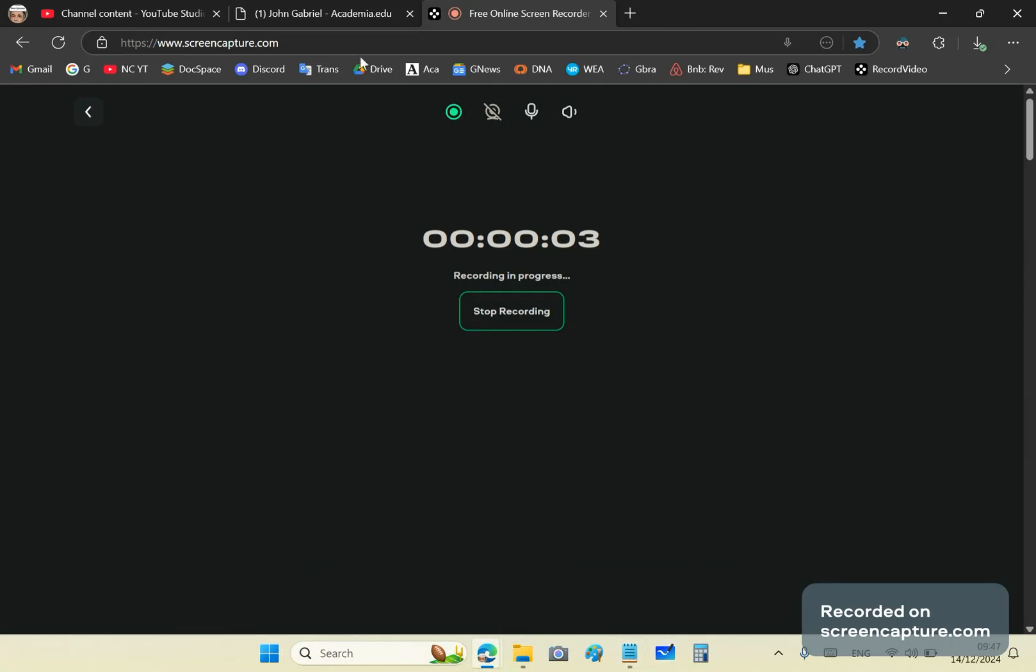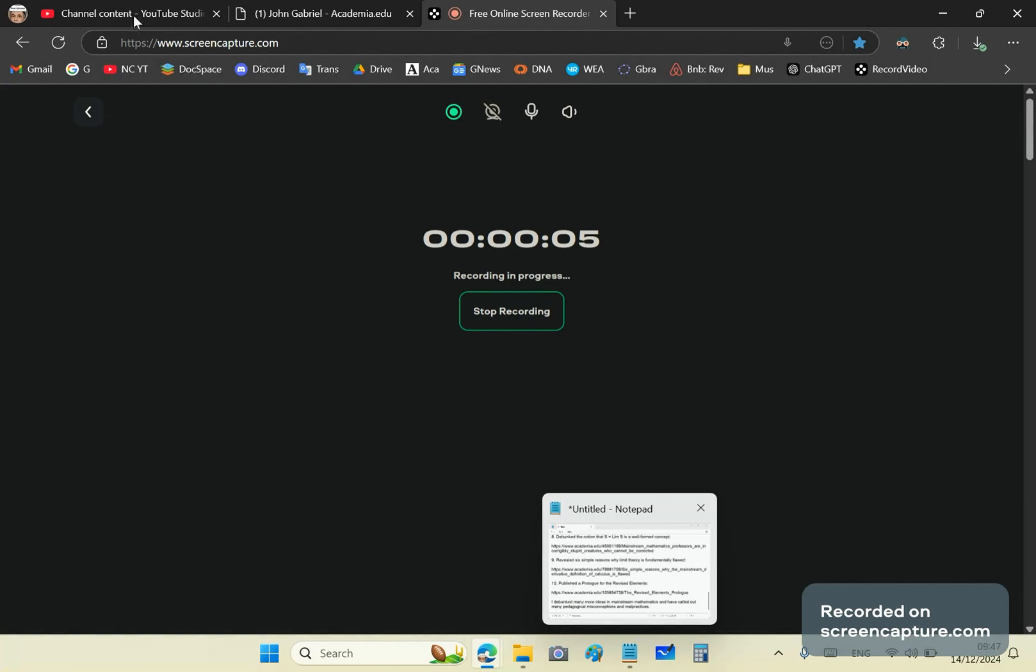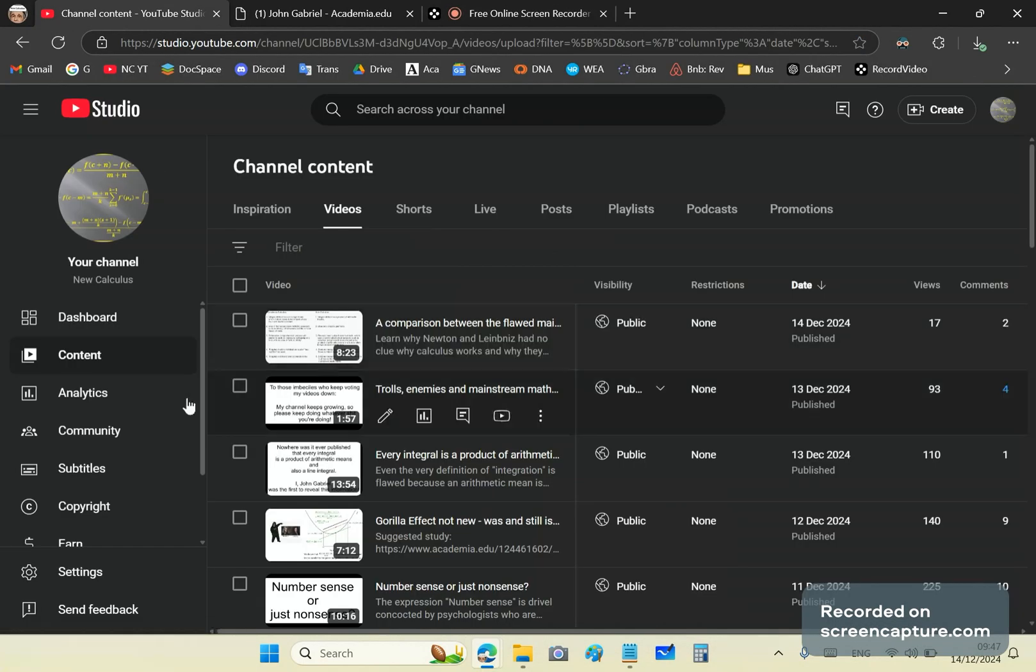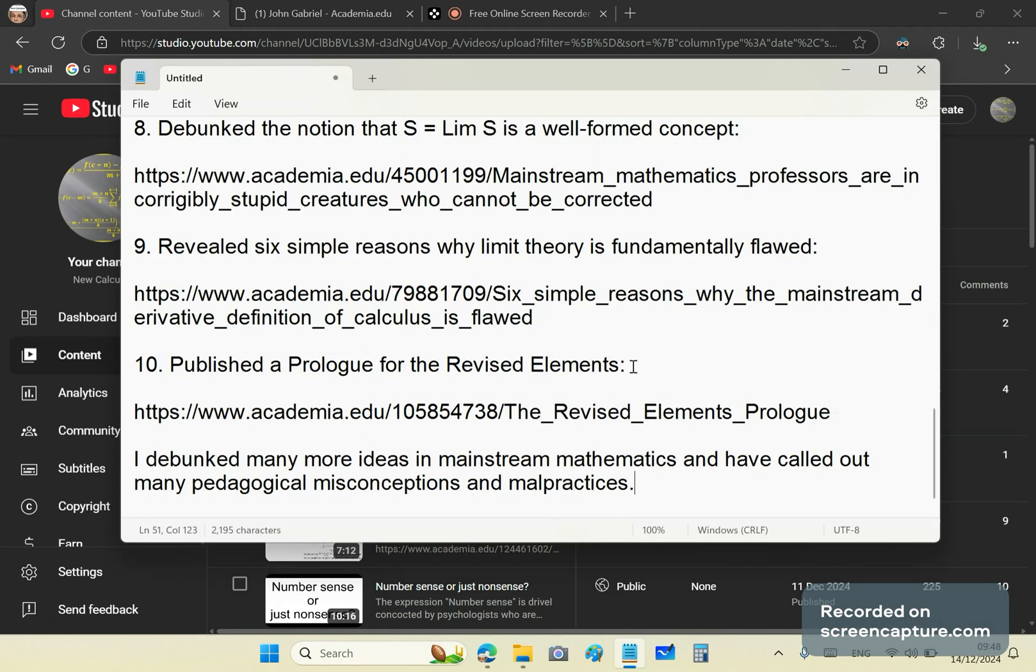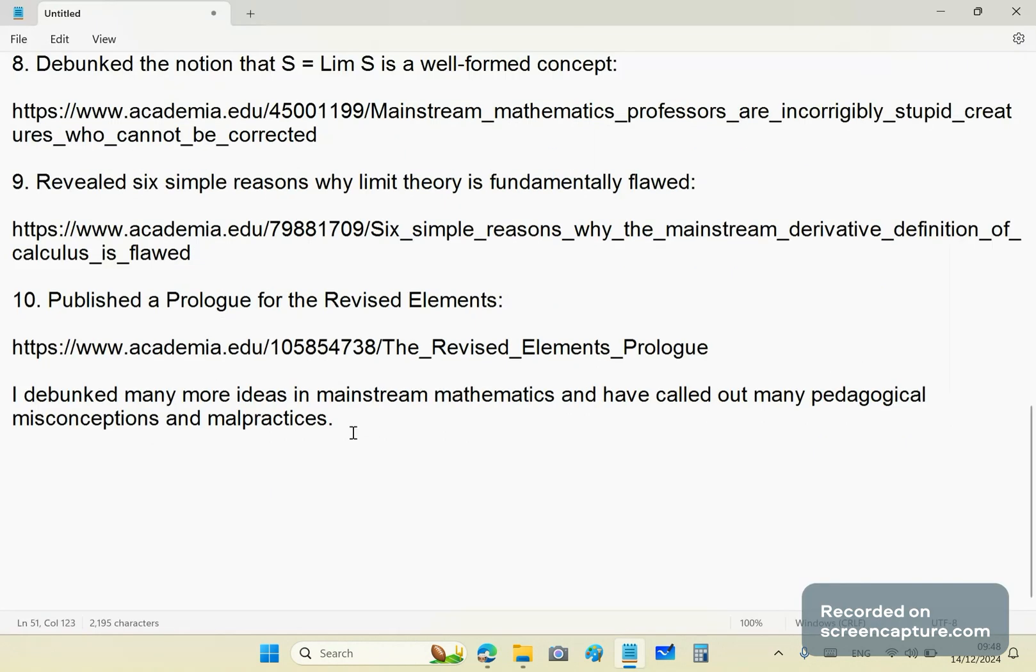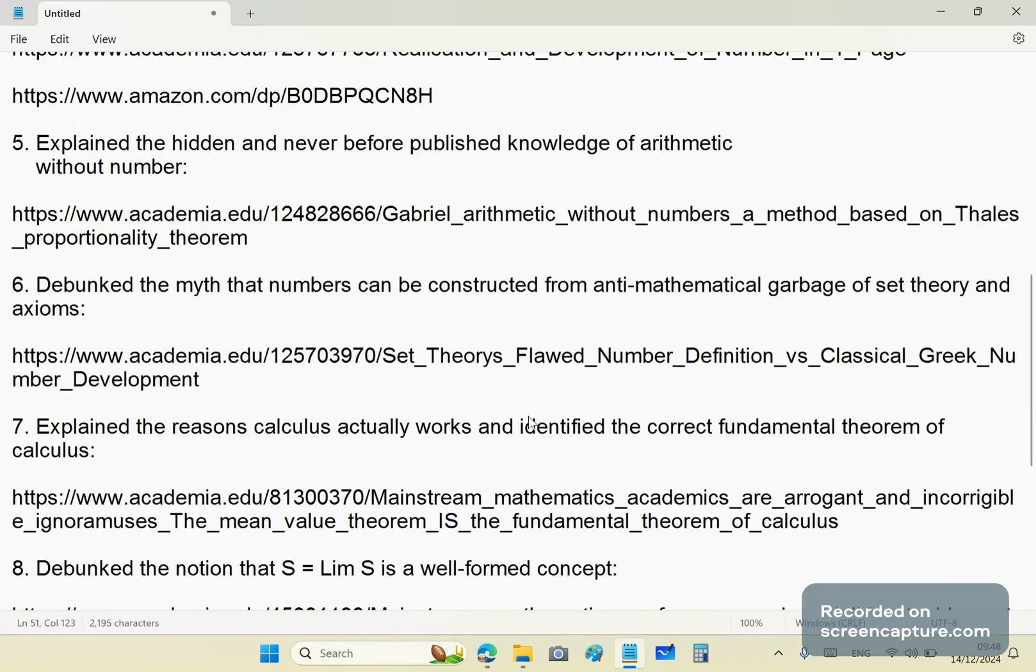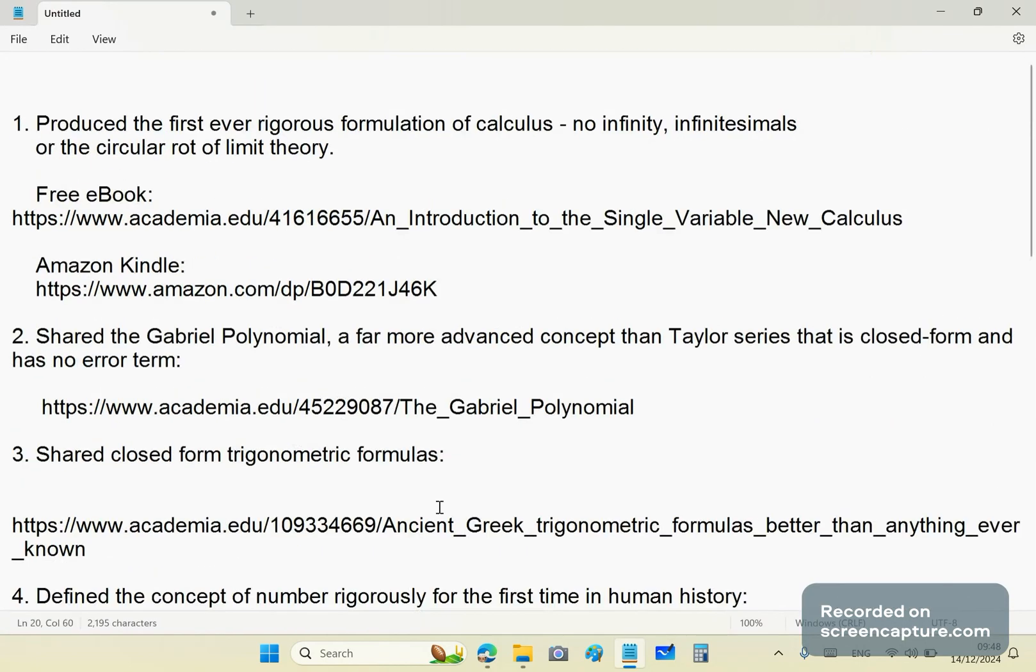Greetings once again. My name is John Gabriel and this is the new Calculus channel. So this morning I checked some of the drivel that was posted on my channel and there was some smug moron who got on and asked what problems, what mathematical problems have I solved? Well, this guy first of all is an insignificant nobody who thought he had me cornered. But I'm going to give you just 10 reasons why I am the greatest mathematician and why I have solved and debunked many notions that were thought to be correct in the mainstream.